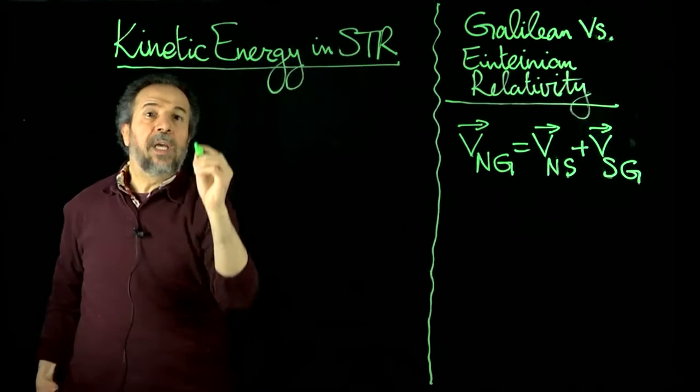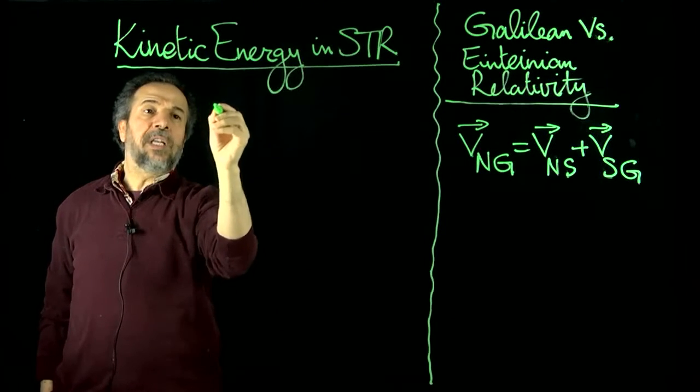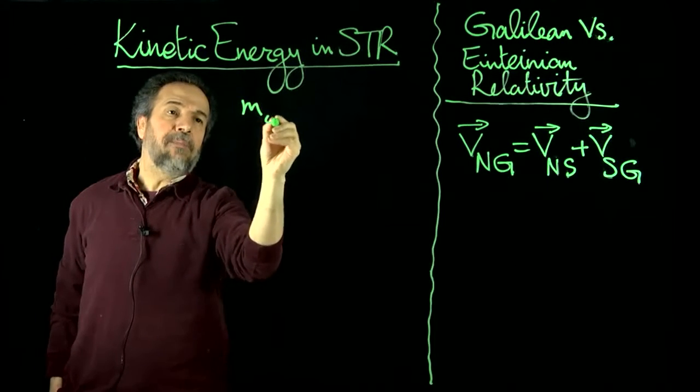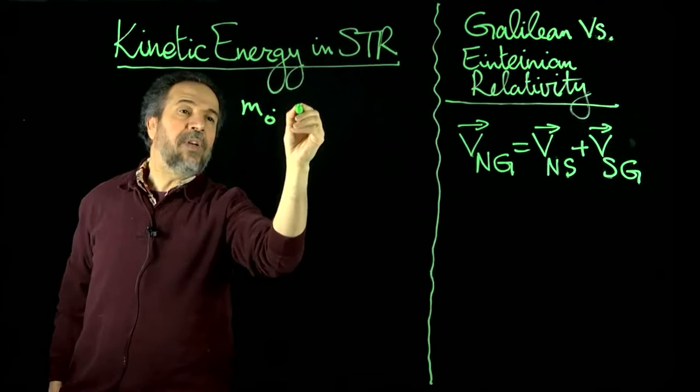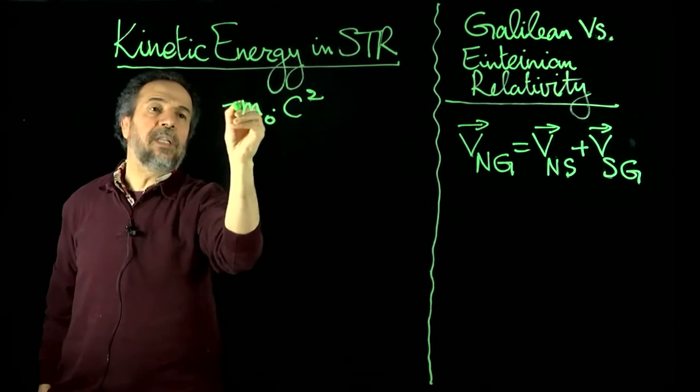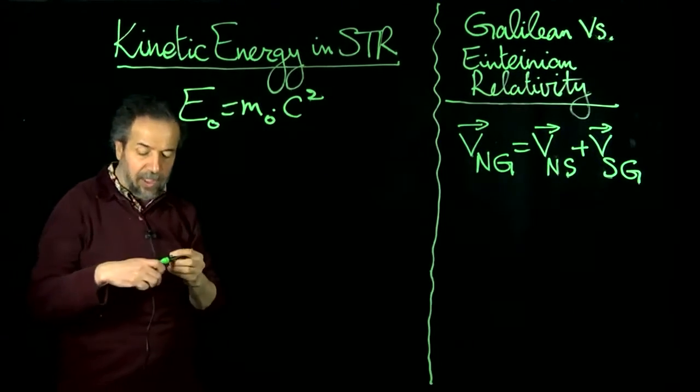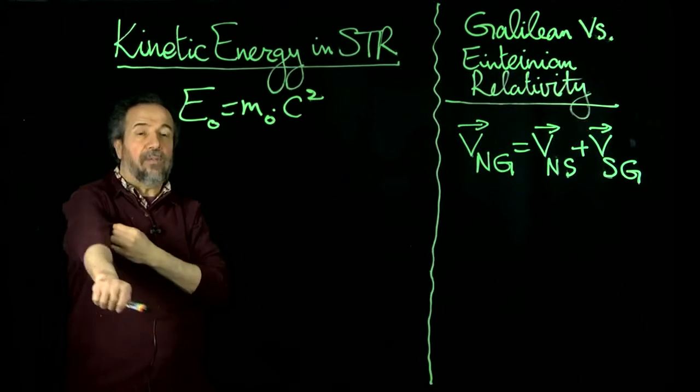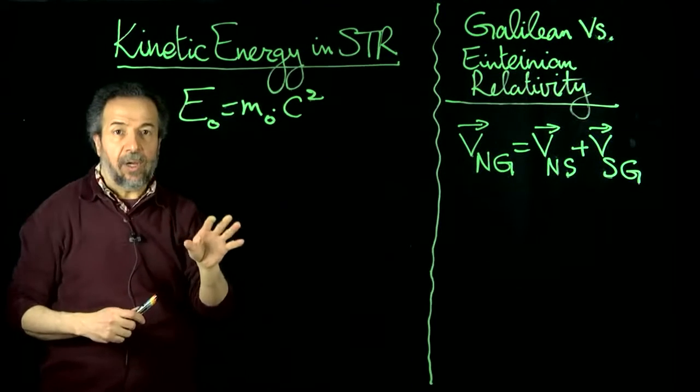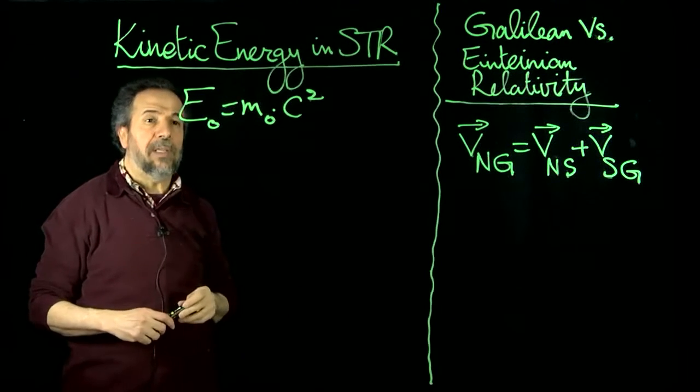We know that an object that is at rest that has a mass M0 will have an energy associated with it that is E₀ = M0C². This is the most famous formula that all of you should have known by now. And we already saw how it's used in class.